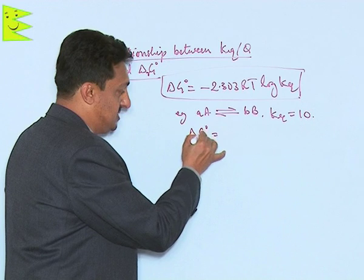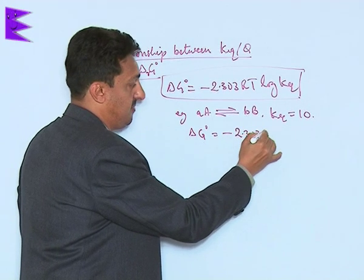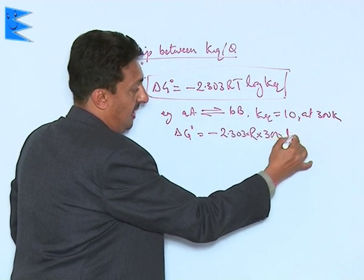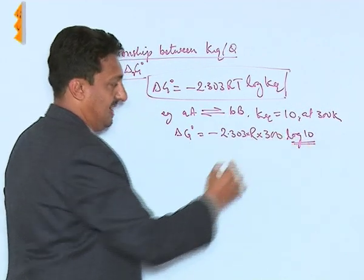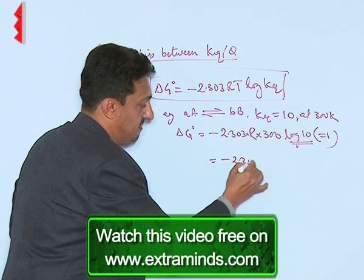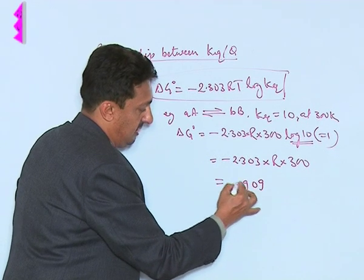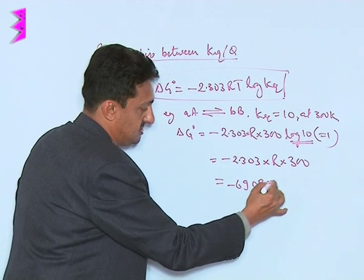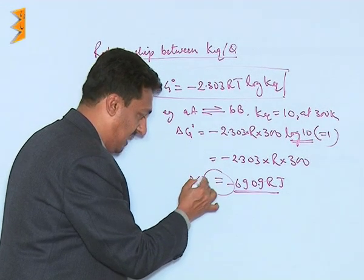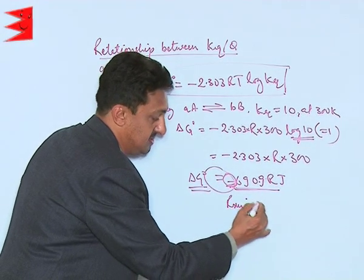Now let us see what will be the value of the free energy change. It will be minus 2.303 into R into 300 Kelvin, and log 10 equals 1, so it becomes minus 2.303 into R into 300, giving minus 9096R joules. Since this value is negative, the standard free energy is negative, which means the reaction is spontaneous.